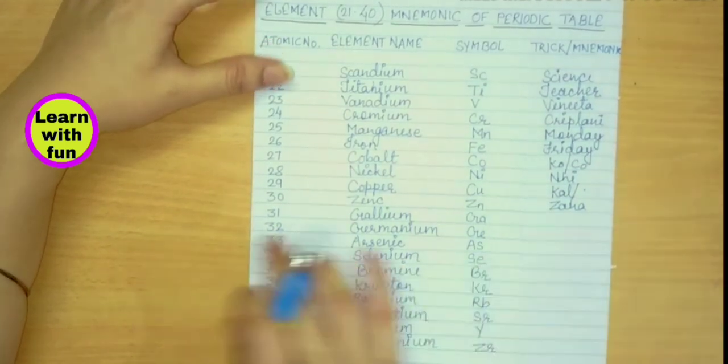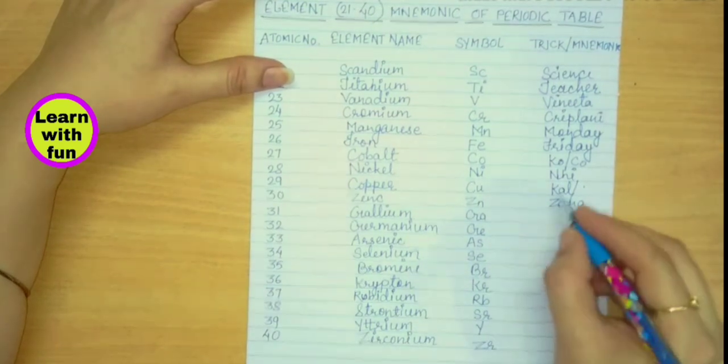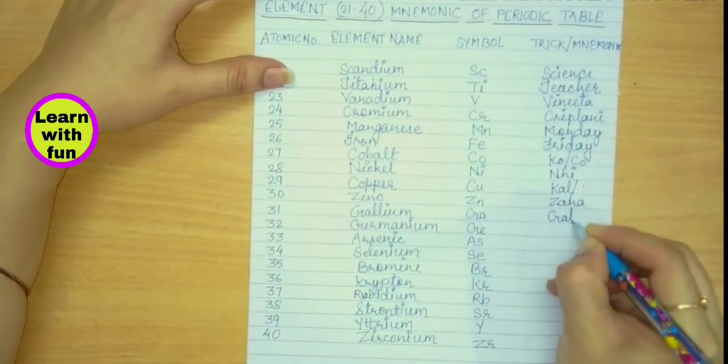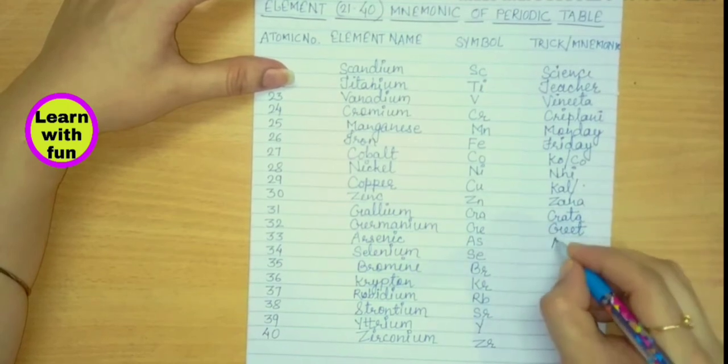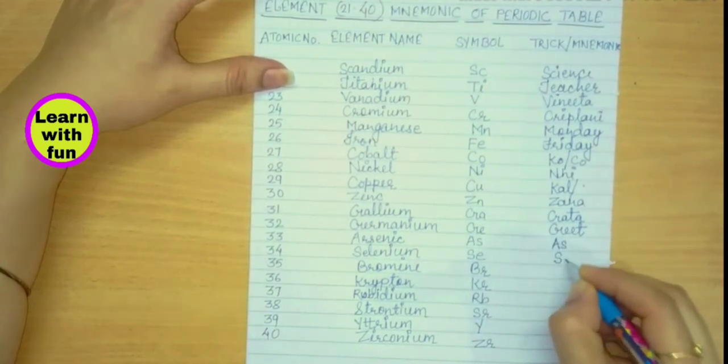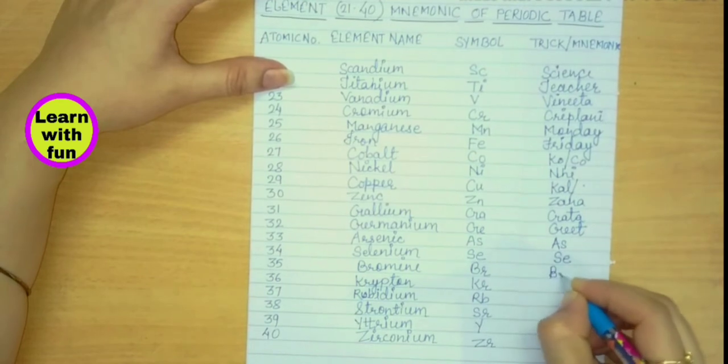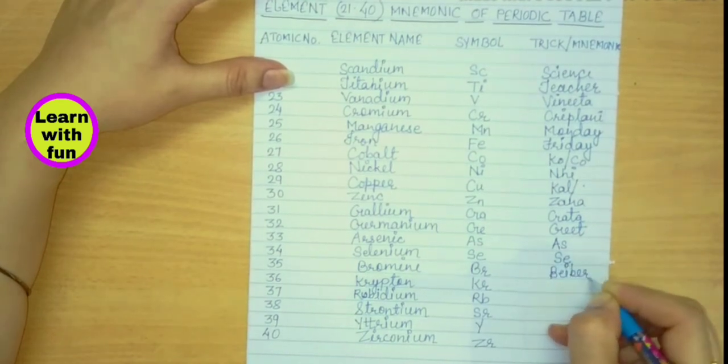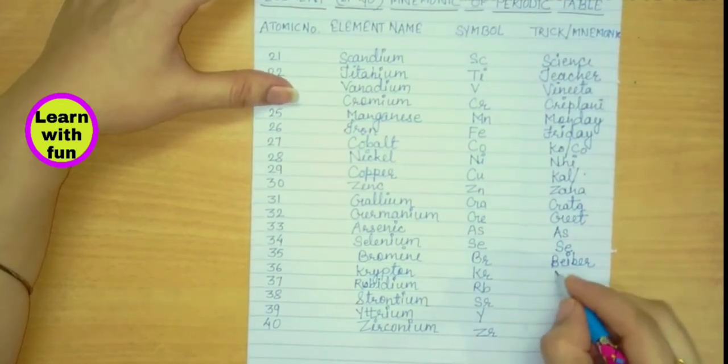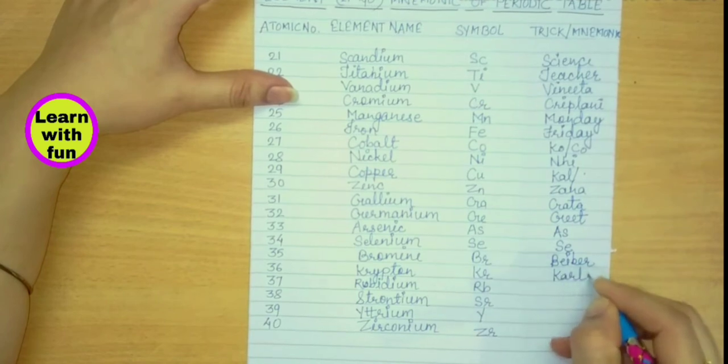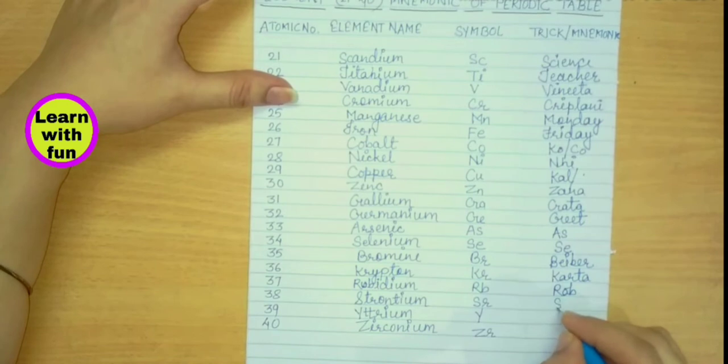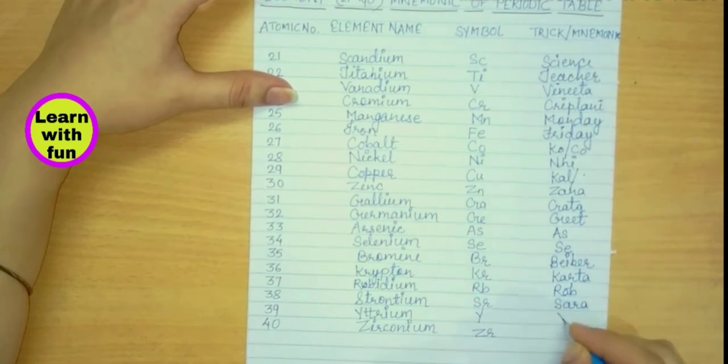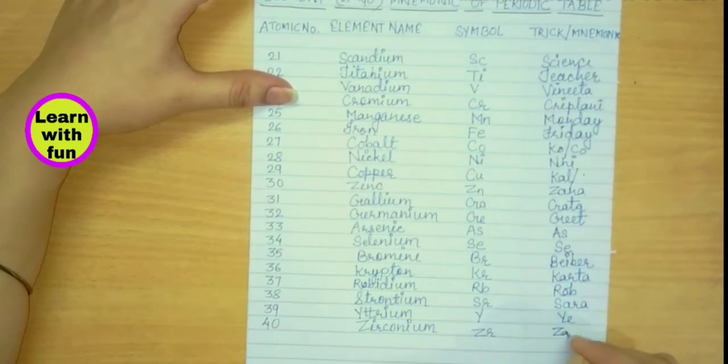So let's write for 31 to 40, Gallium to Zirconium. Gaata geet aayse Biba - you know about Biba, famous singer - Biba karta rob sara ye zamana.